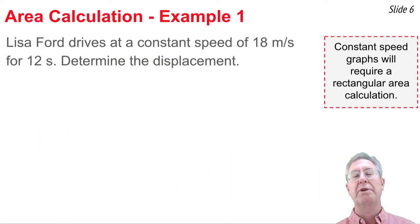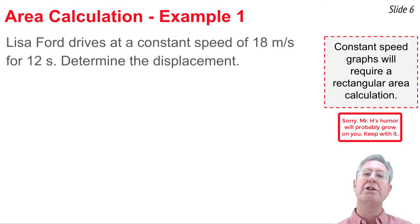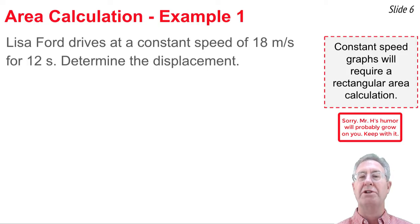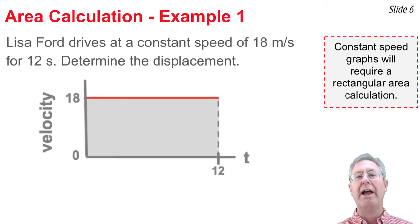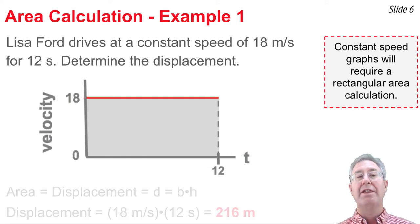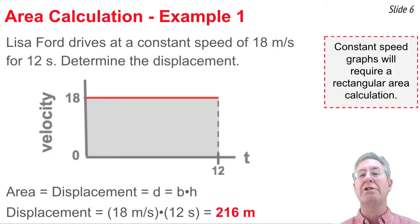Let's do three examples. First: Lisa Ford drives at a constant speed of 18 meters per second for 12 seconds — determine the displacement. This is a constant velocity situation, so we use a rectangular area calculation. The graph shows a horizontal line at 18 m/s for 12 seconds. The area is 18 meters per second times 12 seconds, giving a displacement of 216 meters.